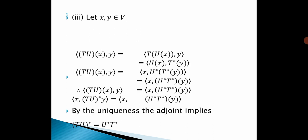Third property: Let x, y belong to V. The inner product of (TU)(x), y equals the inner product of U(x), T*(y). Therefore, the inner product of (TU)(x), y equals the inner product of x, U*T*(y). That is, the inner product of (TU)(x), y equals the inner product of x, (U*T*)(y). This implies the inner product of x, (TU)*(y) equals the inner product of x, (U*T*)(y). By the uniqueness of the adjoint, (TU)* = U*T*.